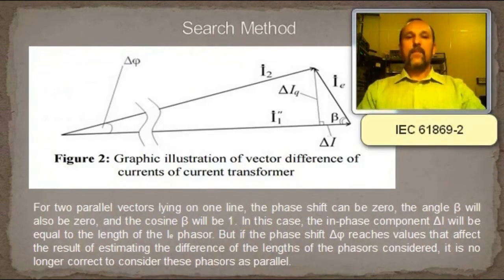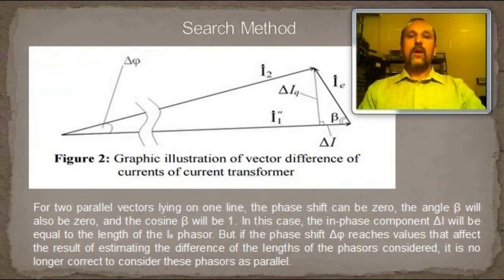International standard IEC 61869 part 2 has the Annex A, in which an explicative vector diagram is given to explain the determination of the ratio error. This annex illustrates the error triangle, which distinguishes two components of composite error, namely the in-phase component and the quadrature component of exciting current, which is composite error.